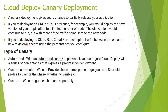We can also use canary deployment in Cloud Run. Cloud Run will split traffic between two revisions. In Cloud Run we can get multiple revisions and shift traffic, or distribute traffic across each revision differently - like one revision gets 50 percent and the second revision gets 50 percent. We can configure all of that. There are multiple types of canary as of now in Cloud Deploy.